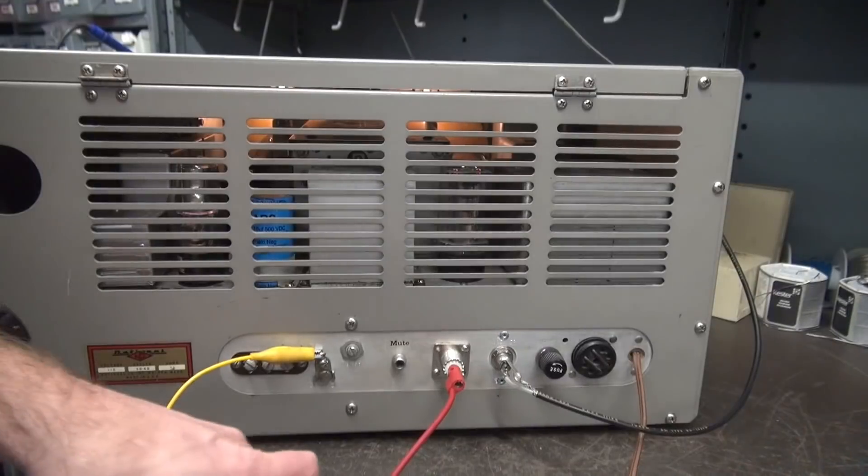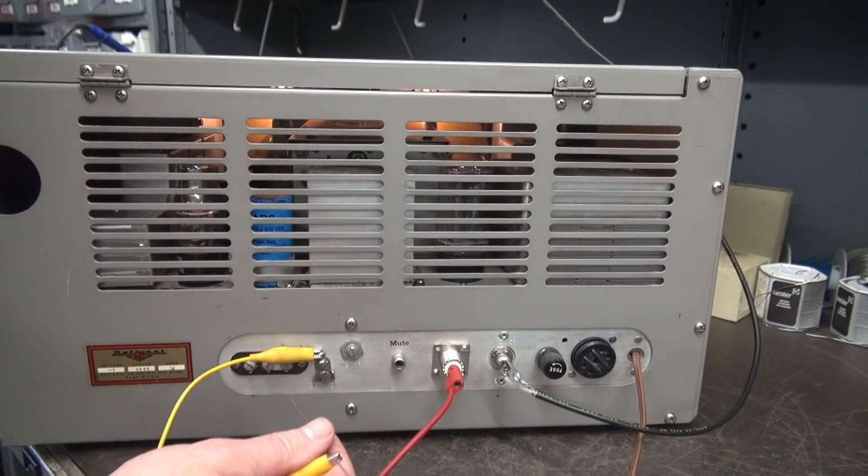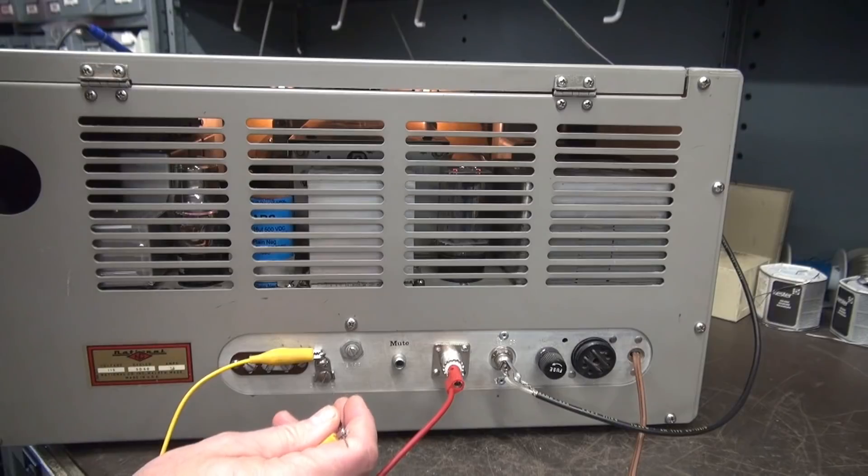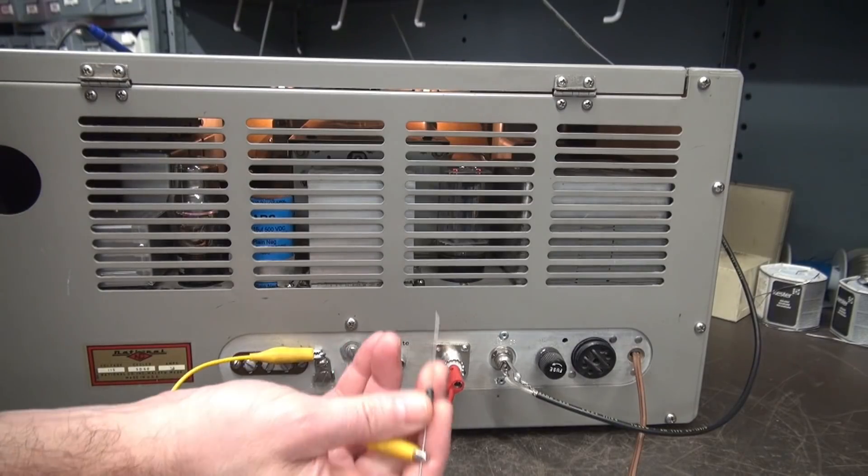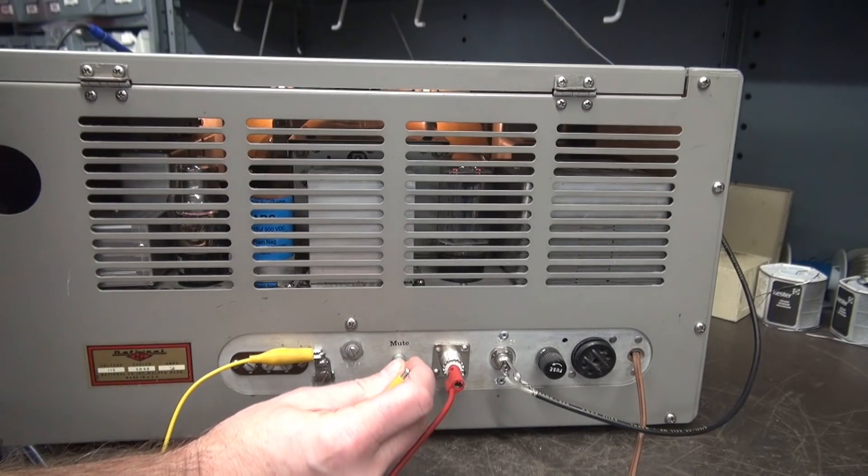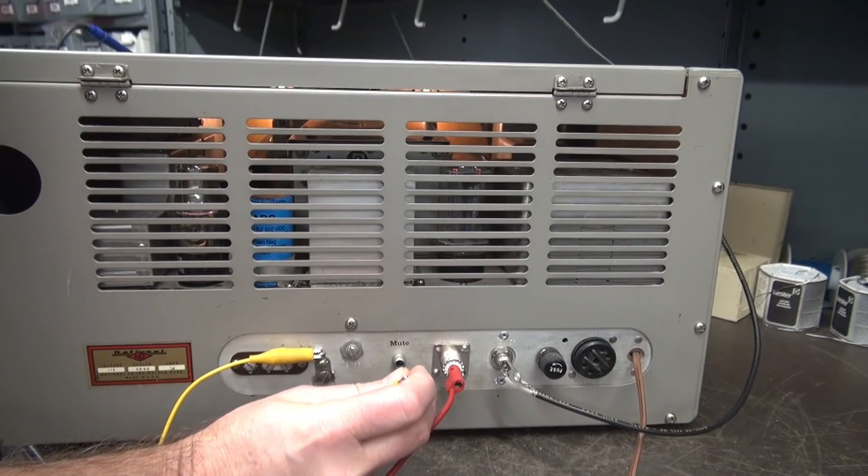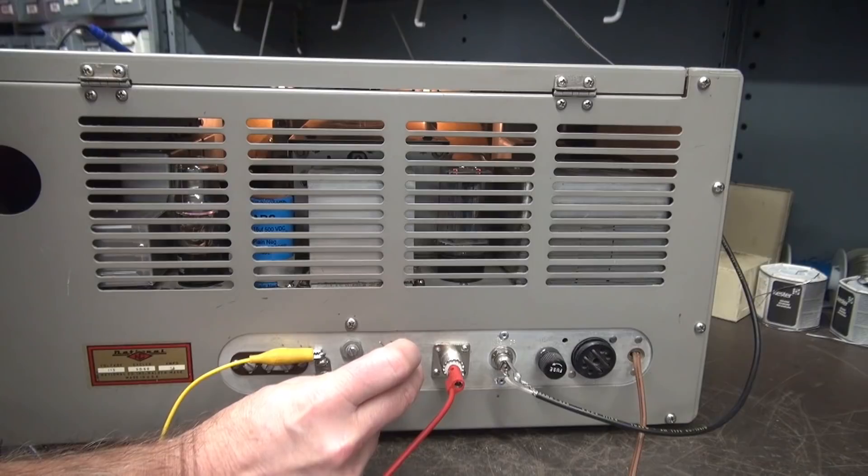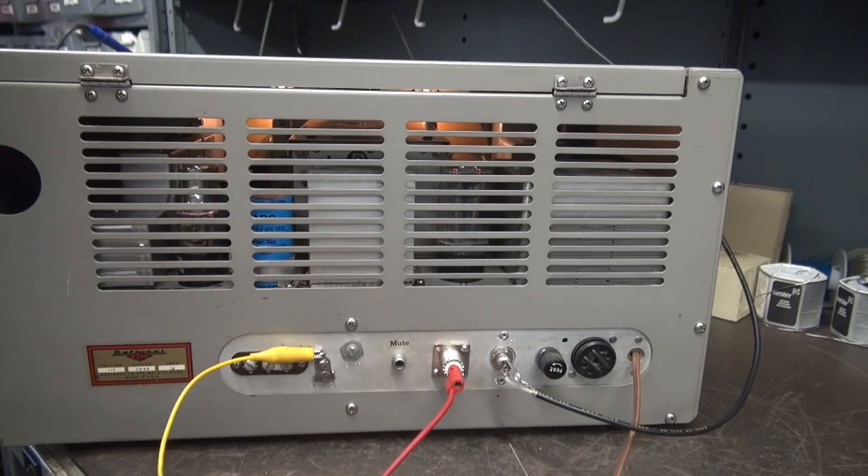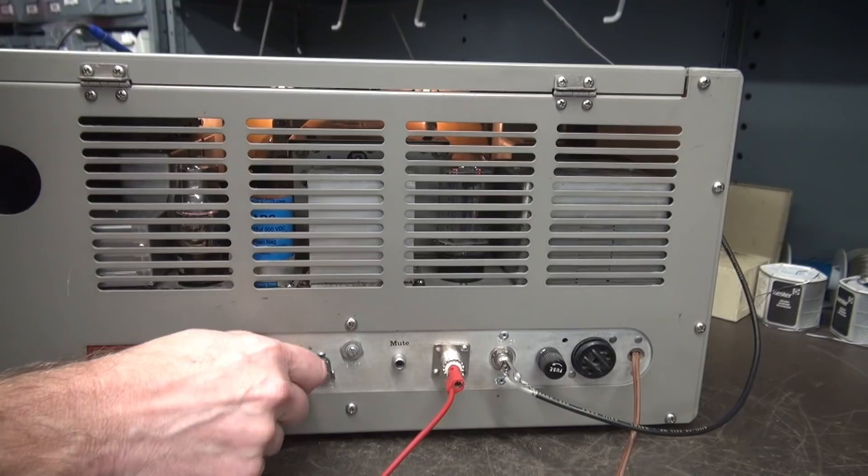Get my meter out of the way. So I'll bring up the RF gain a little bit here. There's the station. Here's our mute function. There it is muted. Back to receive. Back to receive. So you can see it's pretty smooth operation.